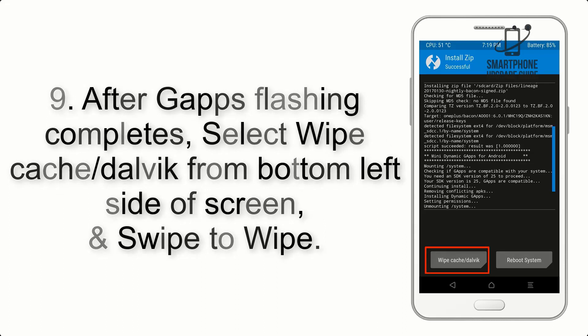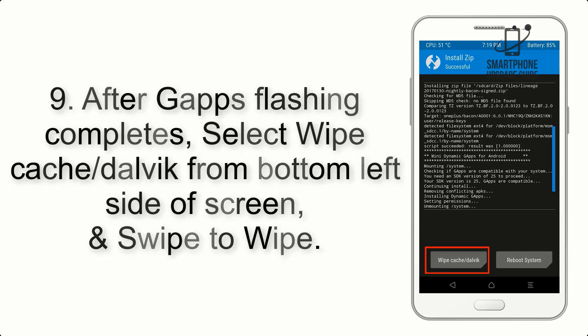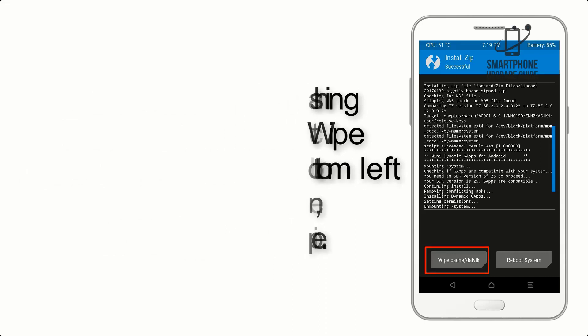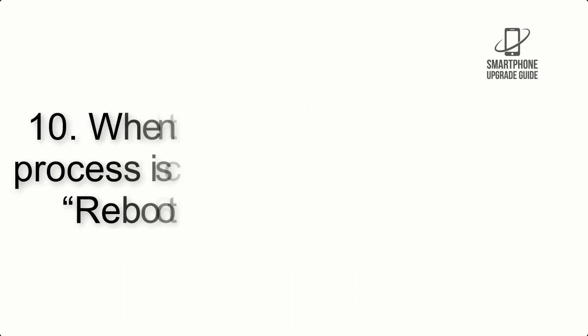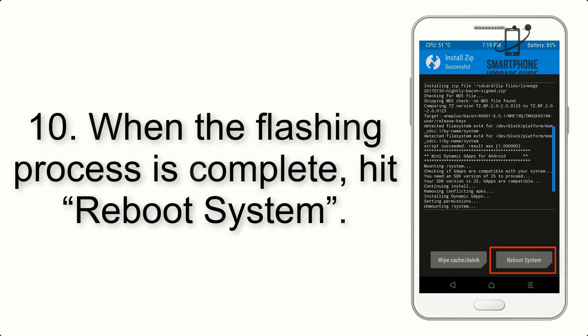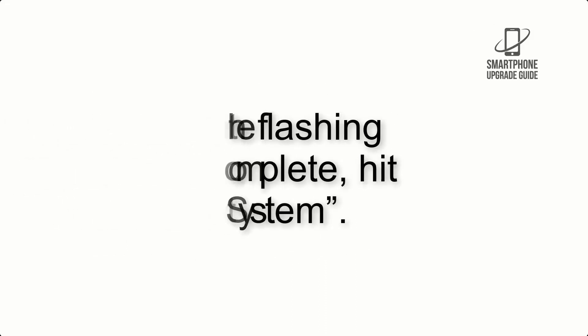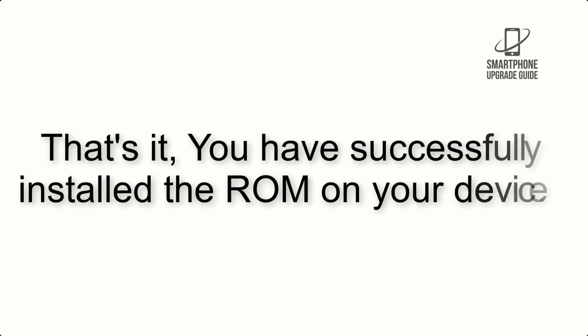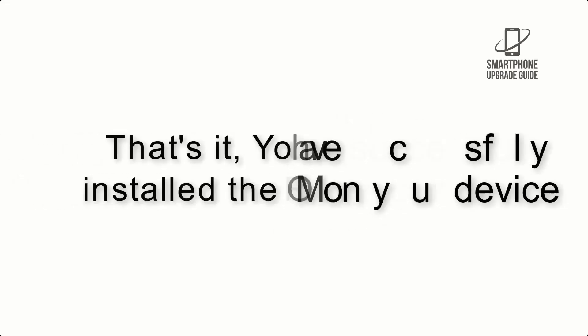Step 8: Flash the GApps zip package in the same manner. Step 9: After GApps flashing completes, select Wipe Cache and Dalvik from the bottom left side of the screen and swipe to wipe. Step 10: When the flashing process is complete, hit Reboot System. That's it — you have successfully installed the ROM on your device.